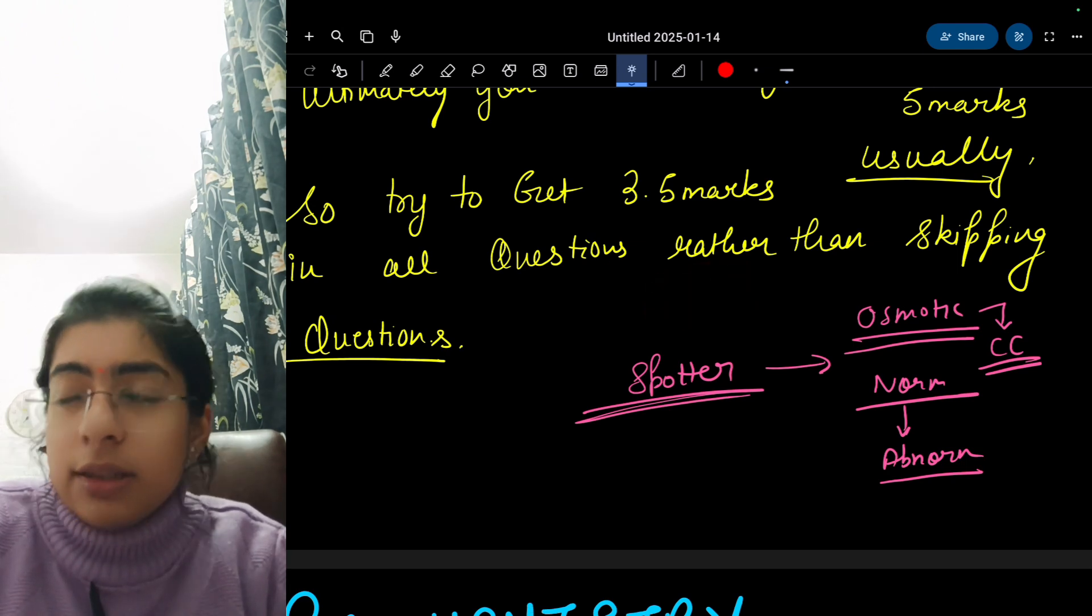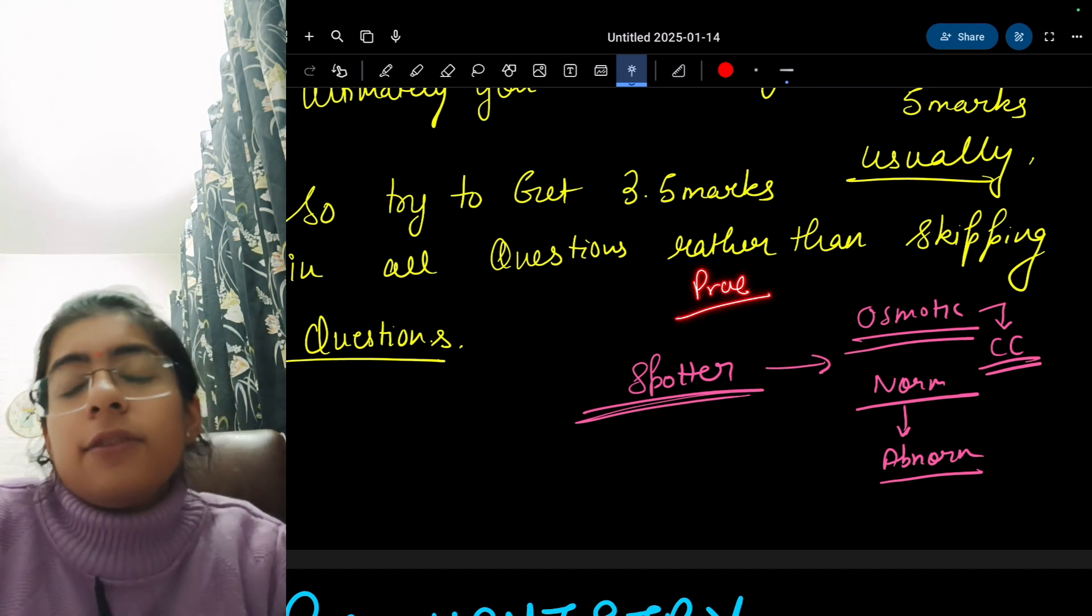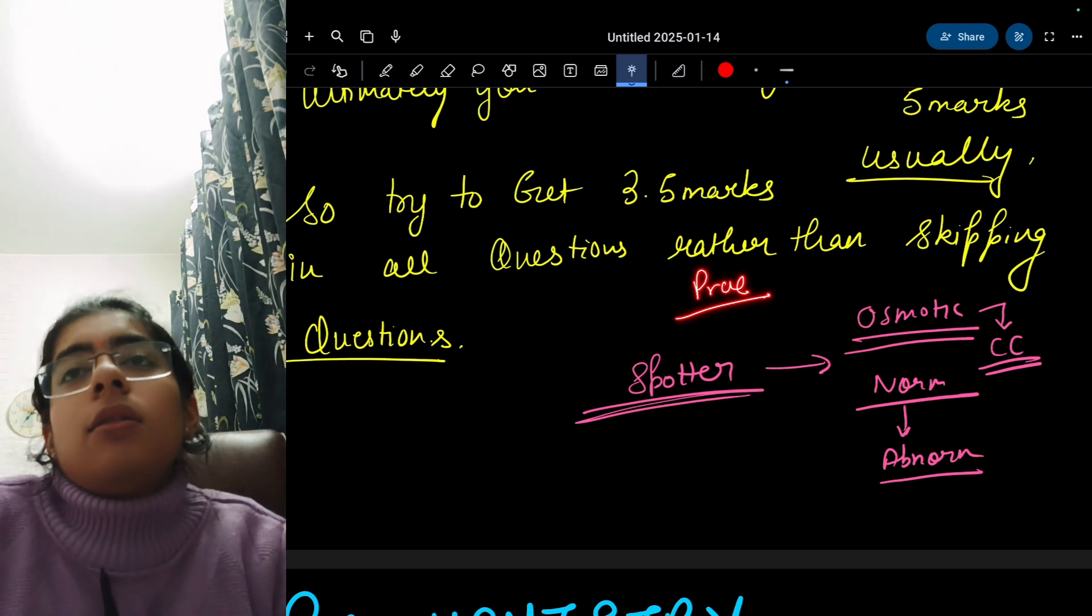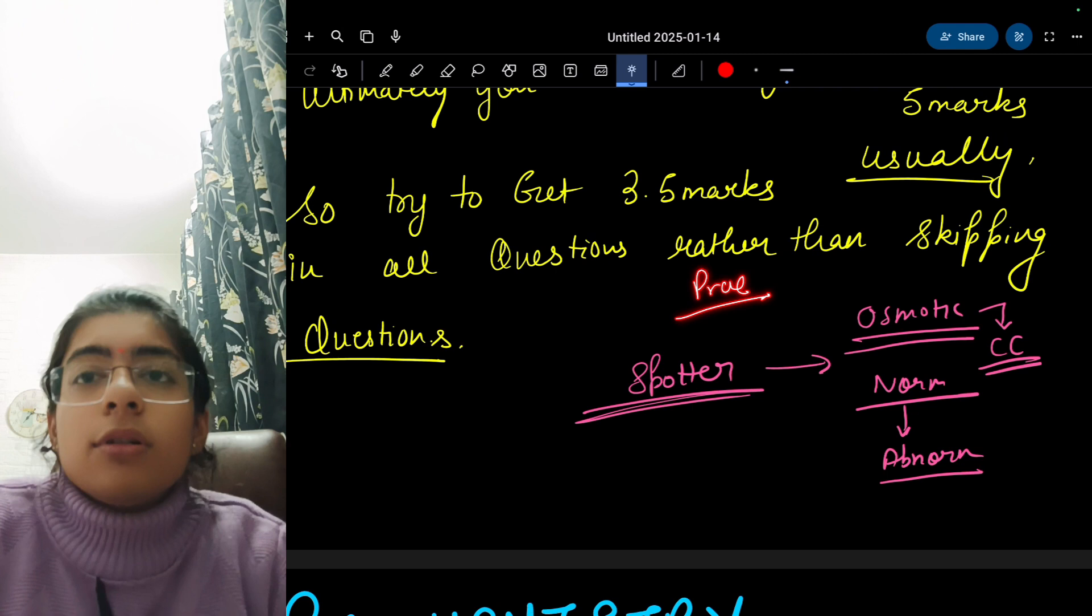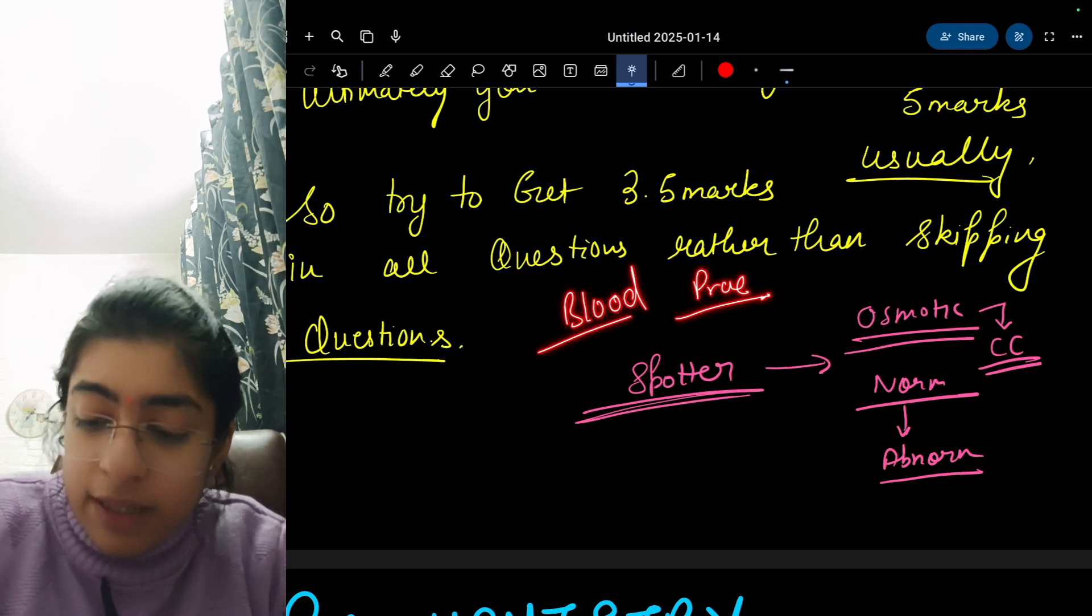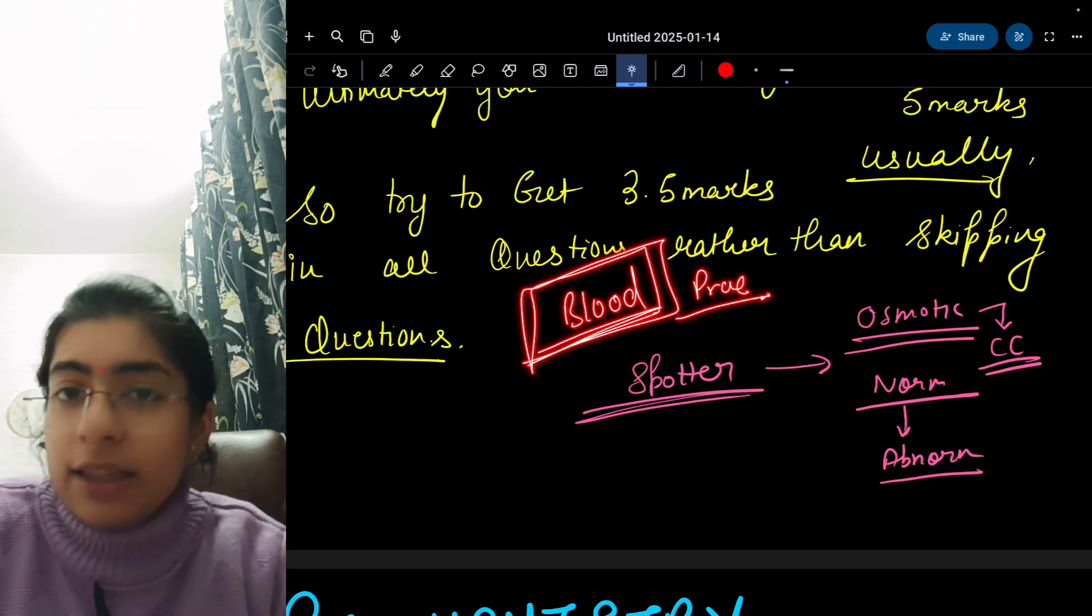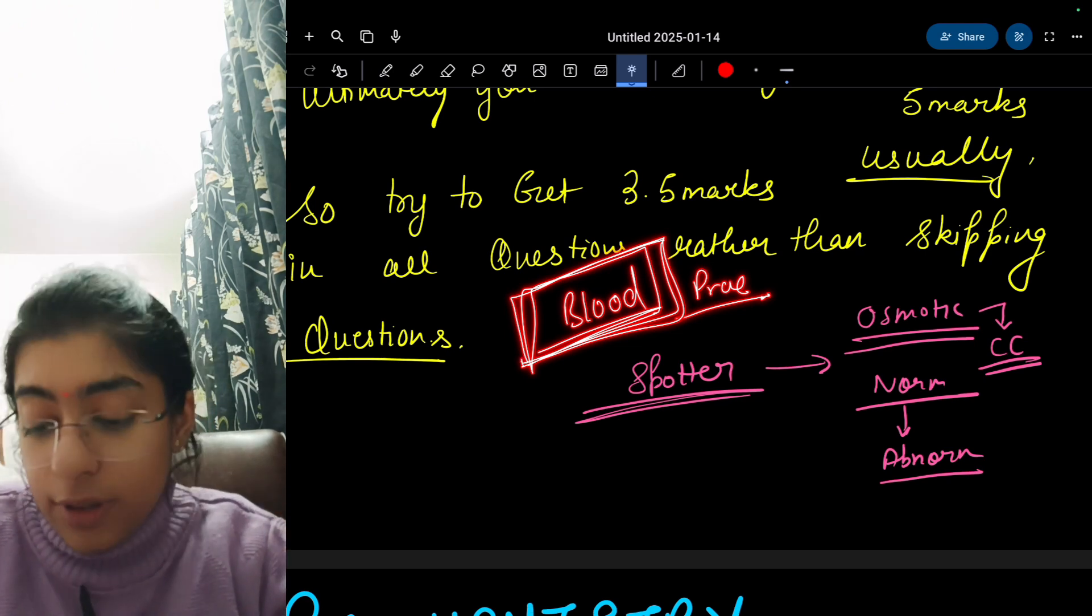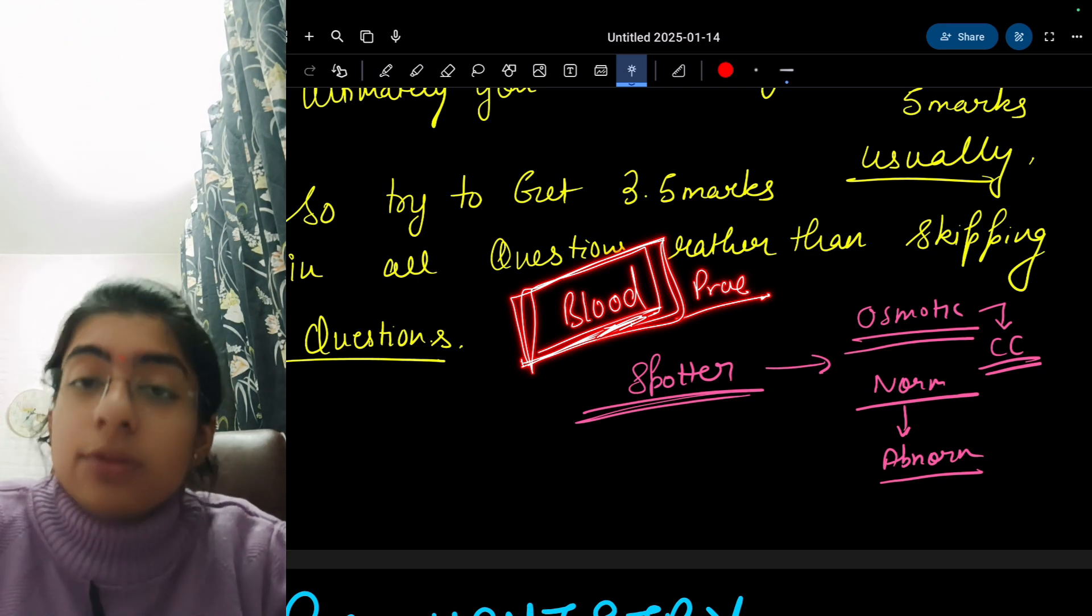Other than these things in practicals, you are asked about basically if there is a Quick RBC count or DLC or WBC count, then they can also ask you the normal physiology part. Study blood very well for your practicals if it is coming in term. If it is coming in final you have to study, but if it is coming in term, then you need to study this chapter.